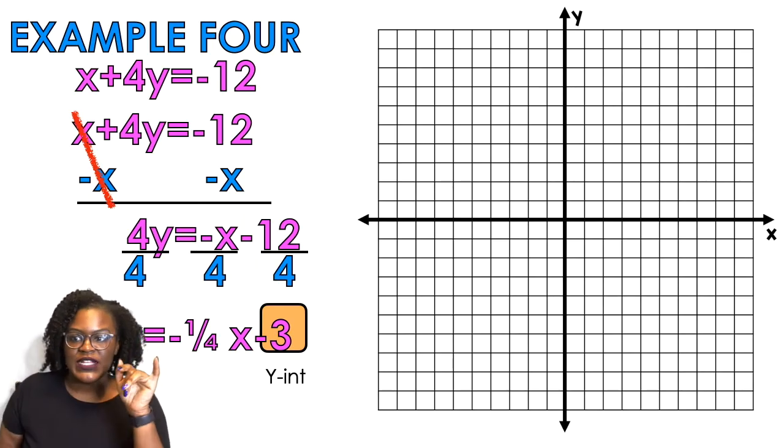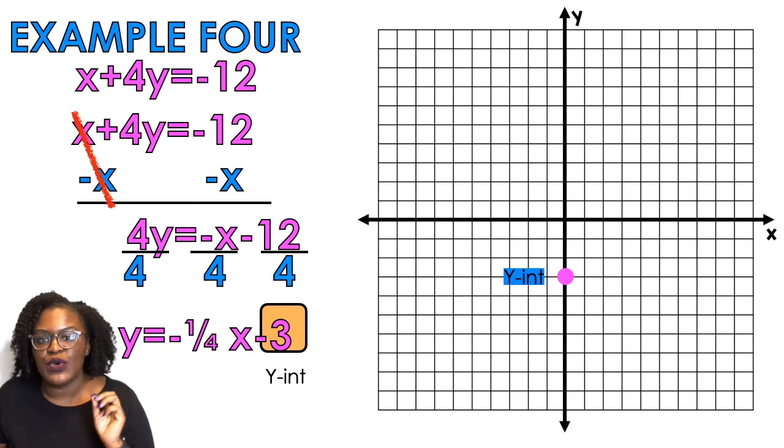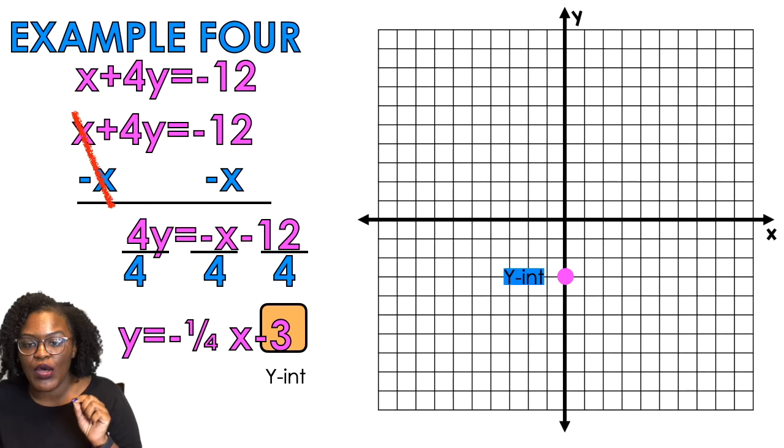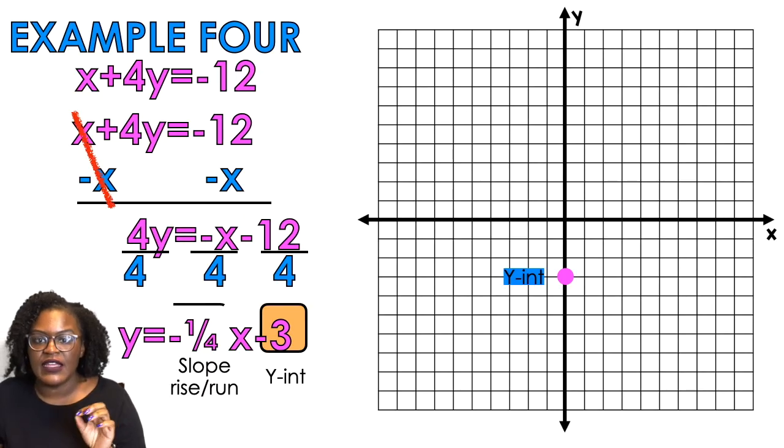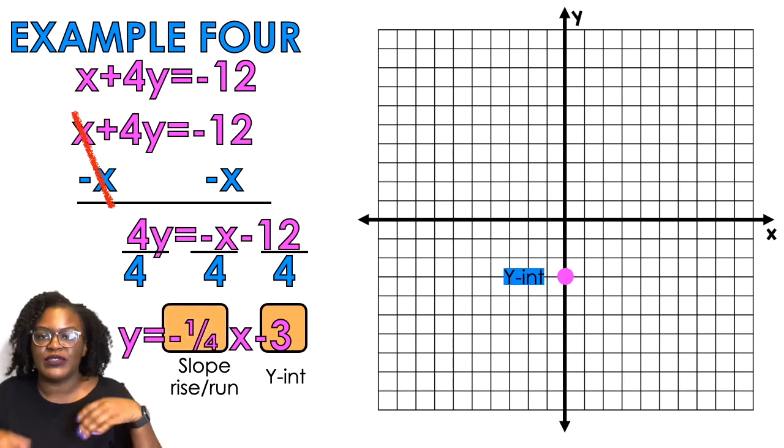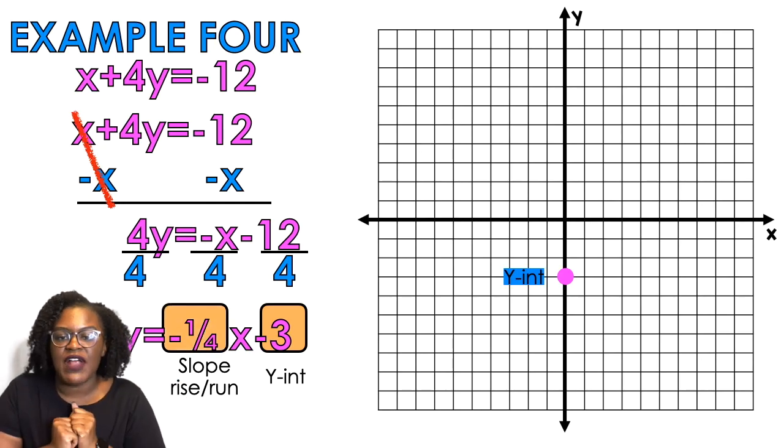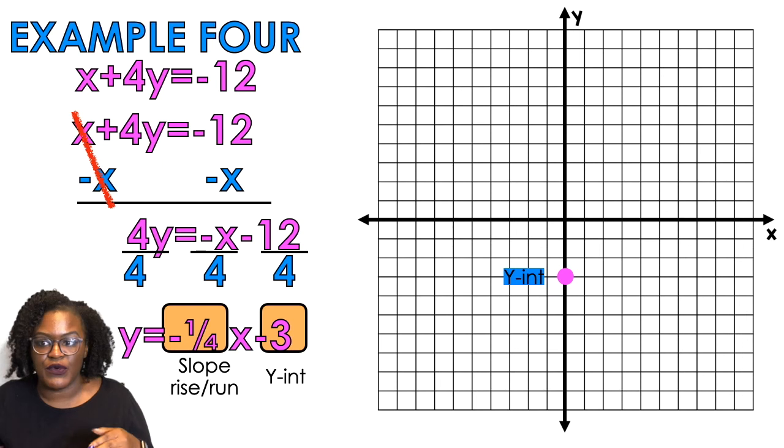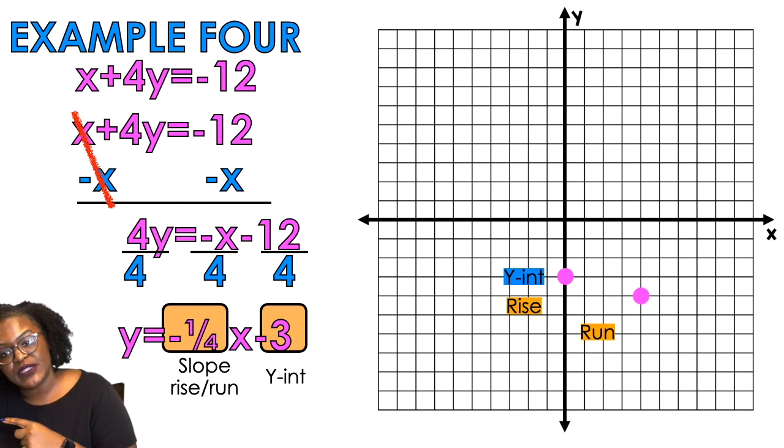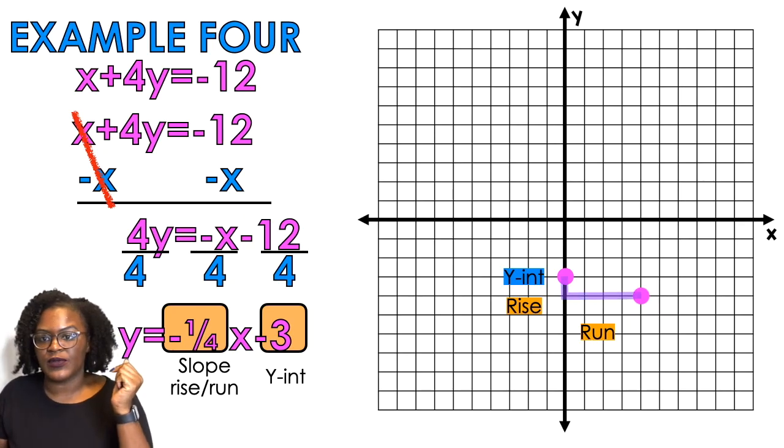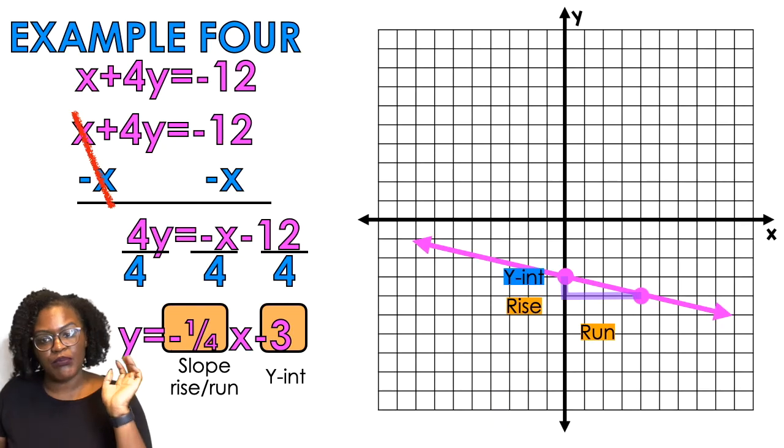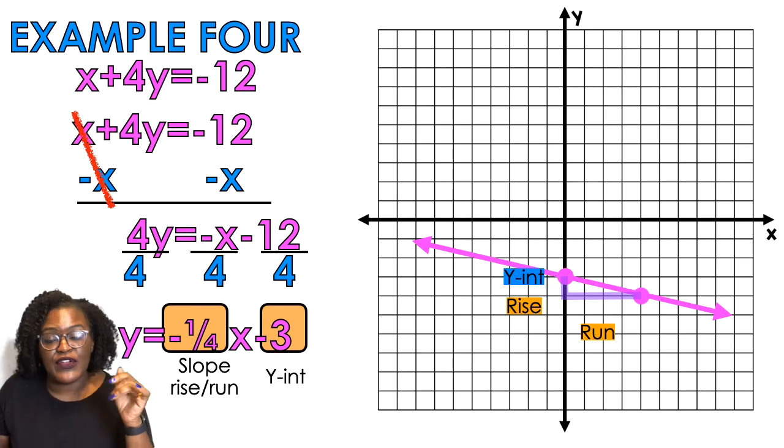So that's gonna go on the graph. So then we're gonna do negative one fourth is my slope. Let me start there, right. My rise is negative one, my run is gonna be four. So we're gonna go down one and we're gonna run over four spaces and there you have it. That is how you graph a line in slope intercept form.